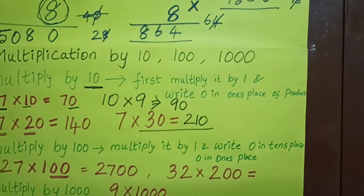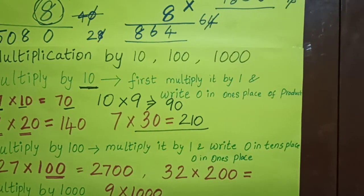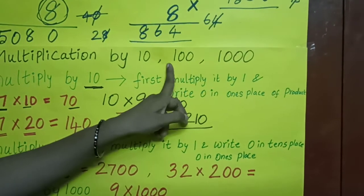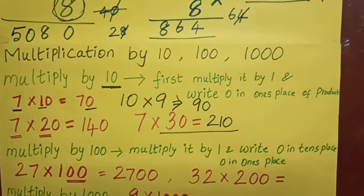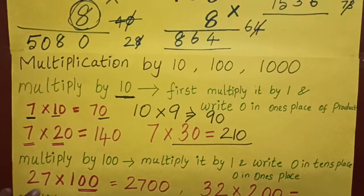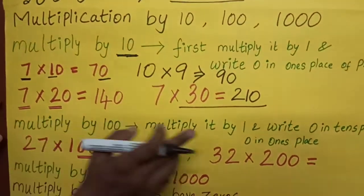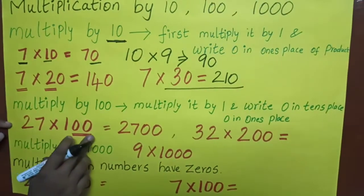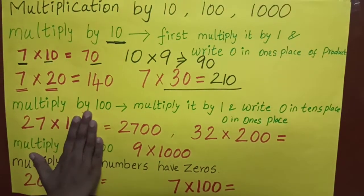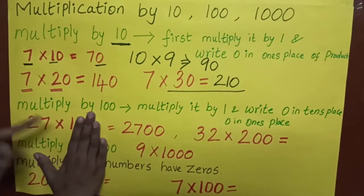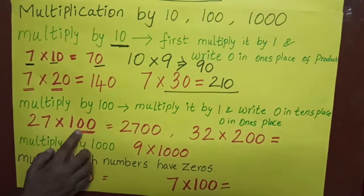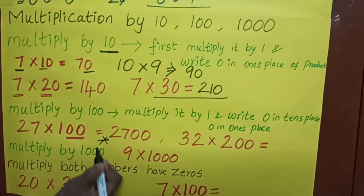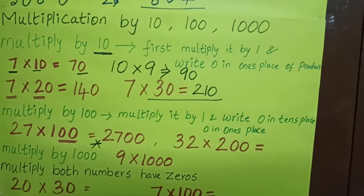If it is 2 zeros, we multiply by 100. If the number is having 2 zeros, we call it 100 — a 3-digit number. If the number is multiplying by 100, what we have to do? Multiply with 1, then put zeros in the one's and ten's places. For example, 27 into 100: multiply 27 into 1, the answer is 27. Then add 2 zeros on the back side. That's all.